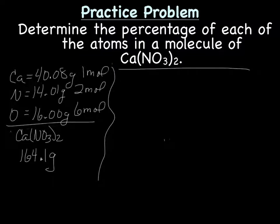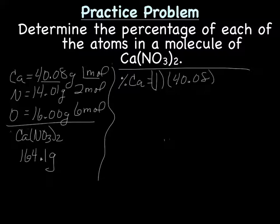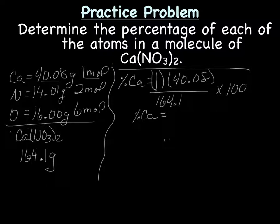Now we need to figure out the percent by mass of each of the atoms in the molecule. So, the percent of calcium, we start with the number of moles of calcium, which is one mole, times its molar mass, which is 40.08, divided by the molar mass of calcium nitrate, which is 164.1, and we multiply that all by 100, and that comes out to be 24.42 percent with four sig figs.